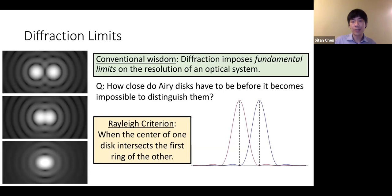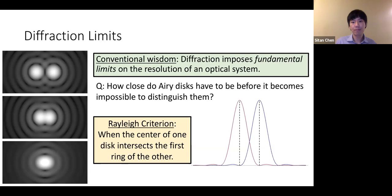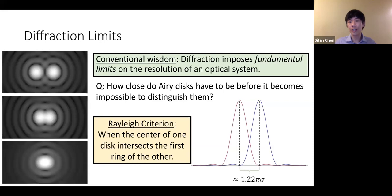A basic question studied by Airy and leading physicists of the time was: how close do two Airy disks have to be before it becomes impossible to distinguish them? Arguably the most famous criterion is the so-called Rayleigh criterion: as soon as the center of one Airy disk intersects the first ring of the other, those two Airy disks are said to be too close to resolve. In pictures, this means the first zero of one density function coincides with the center of the other — a separation of some multiple of sigma — and it makes sense that it scales with sigma because as images become blurrier you need bigger separation to tell them apart.